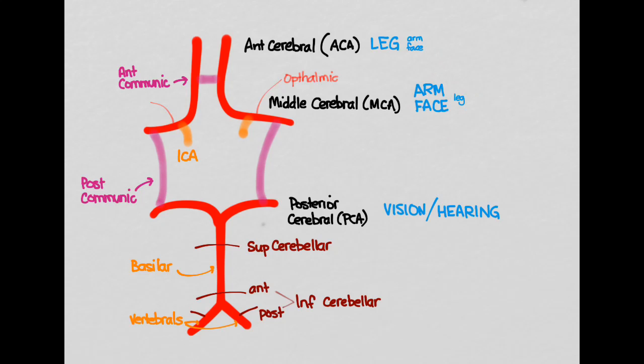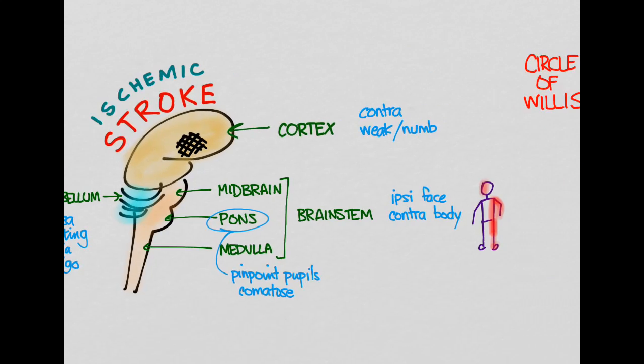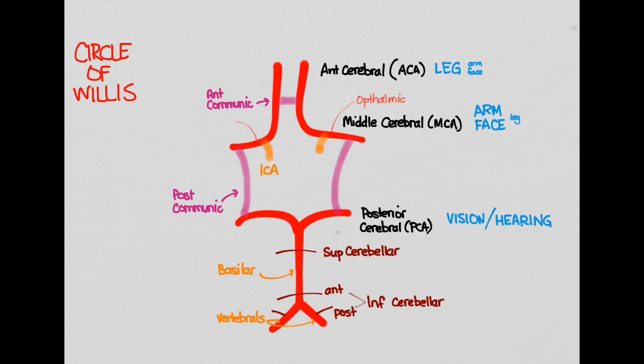So this video let us take a look at the way to localize strokes based on the symptoms that you see, you can localize it to where it is, in the cortex, brainstem, cerebellum, even to which artery that it's in, if we know enough about the circle of Willis.